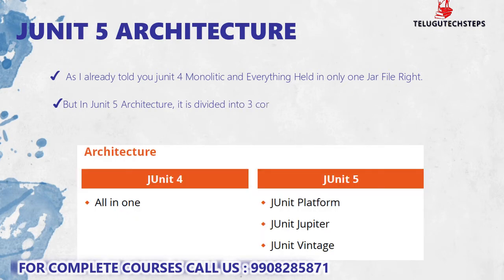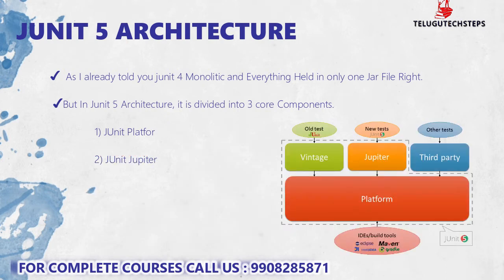But when we talk about JUnit5 architecture, it is not monolithic. JUnit5 architecture is divided into splitted components. It is divided into three core components: first is JUnit Platform, second is JUnit Jupiter, and third is JUnit Vintage.